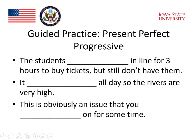For the first sentence, the student fills in the blank: 'The student has been waiting in line for three hours to buy tickets but still doesn't have them.' Students need to think about the verb that fits — what do you do in line? You wait. In the present perfect progressive: 'The students have been waiting in line for three hours to buy tickets.'